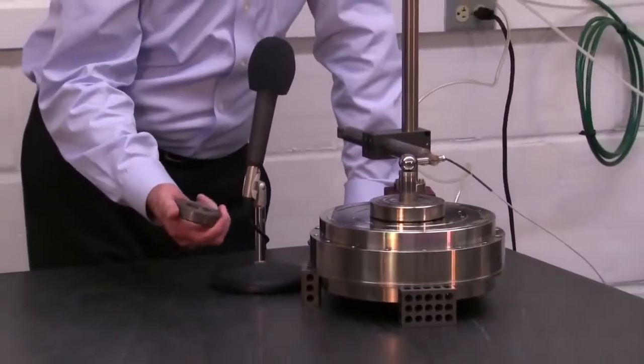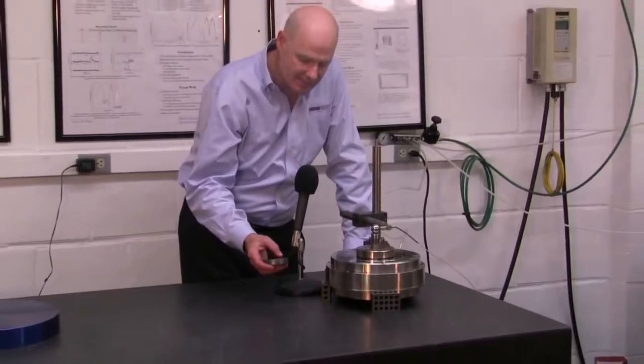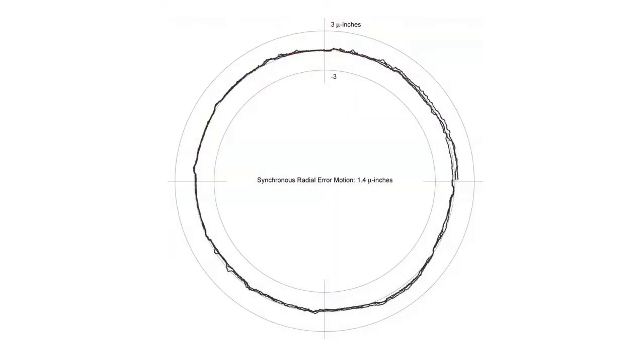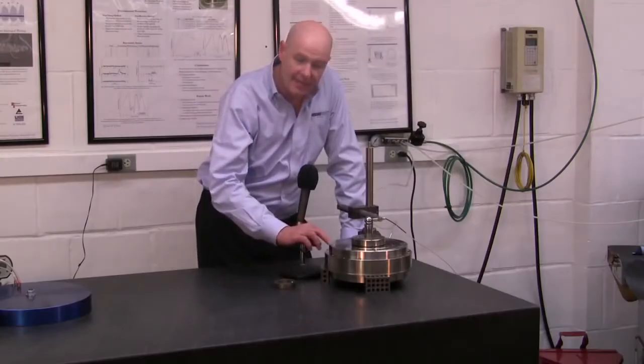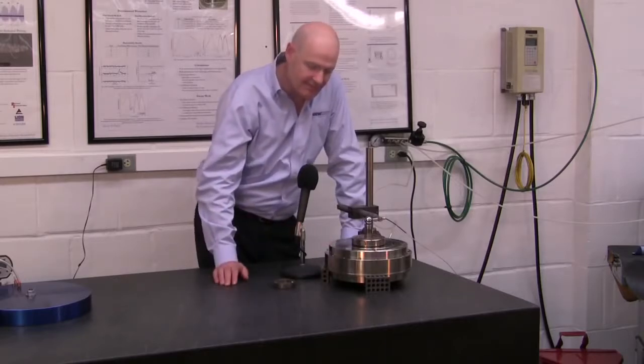A rolling element spindle may have error motions on the order of 20 millionths of an inch, but an air bearing spindle like this would have error motions on the order of two millionths of an inch or even less than that. Air bearing spindles are known to have error motions less than a millionth of an inch.